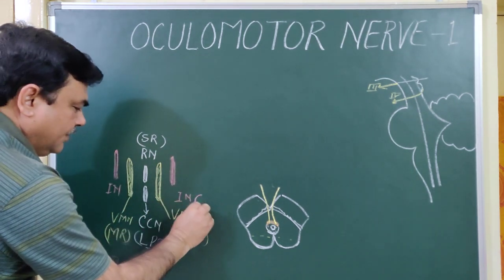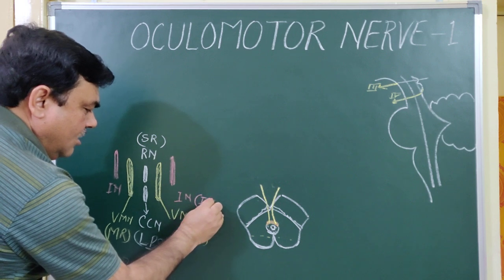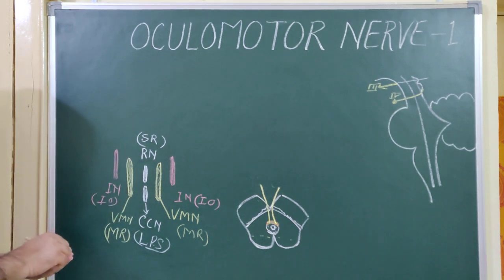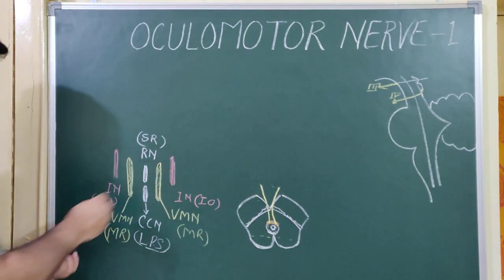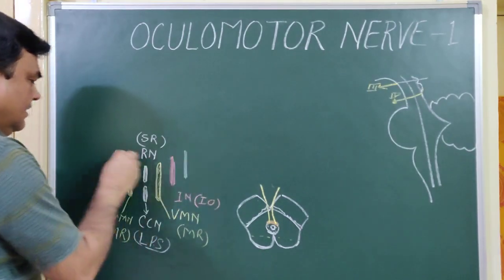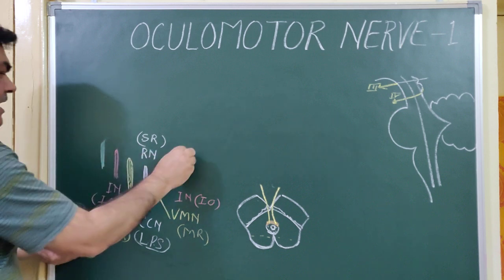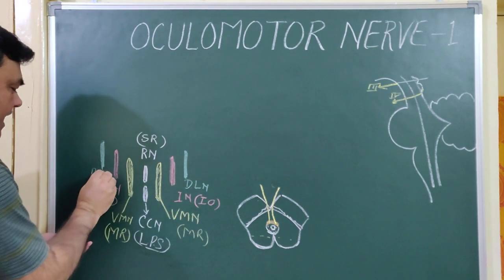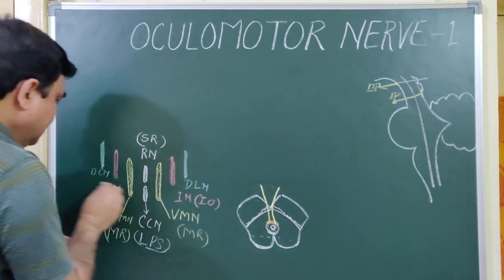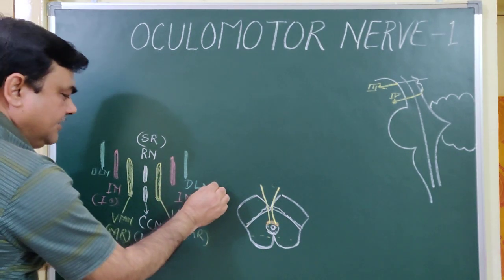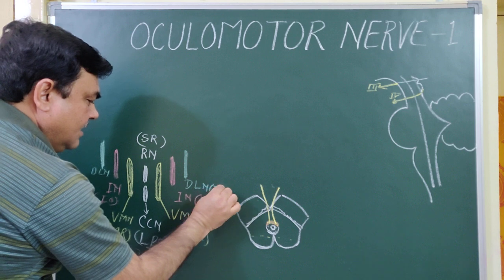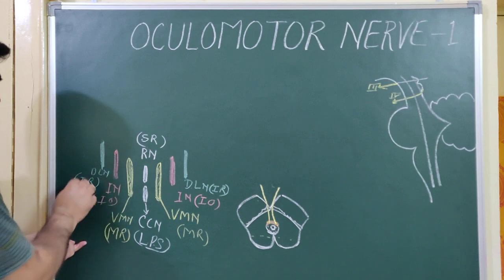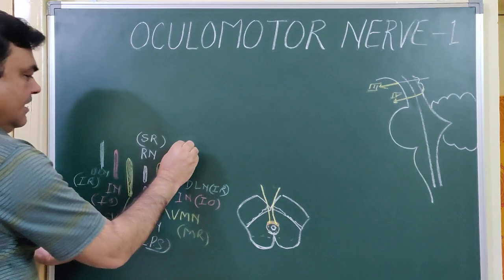The intermediate nucleus gives fibers to the inferior oblique muscle. There is also the dorsal lateral nucleus, which contains nerve fibers for the inferior rectus muscle.